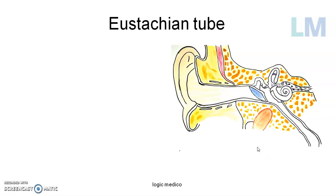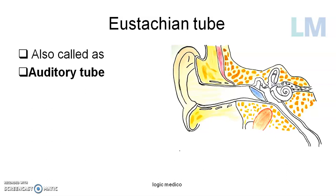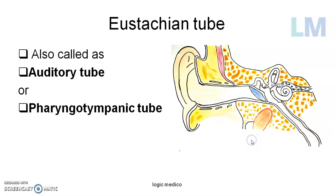This eustachian tube is also called the auditory tube because it helps in better audition or hearing — when maintaining the pressure within the middle ear, it keeps the tympanic membrane in optimum condition, so that it is neither too tensed nor too lax, thereby helping in audition. It is also called the pharyngo-tympanic tube, because it connects the lateral wall of the nasopharynx to the anterior wall of the tympanic cavity. Kindly remember: auditory tube, pharyngo-tympanic tube — if any of these names are asked, the answer refers to the eustachian tube.